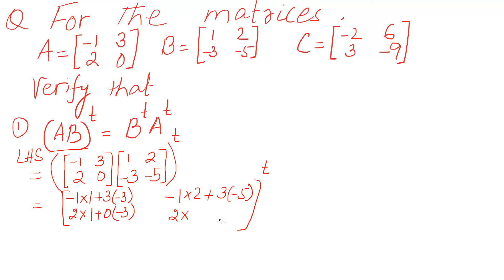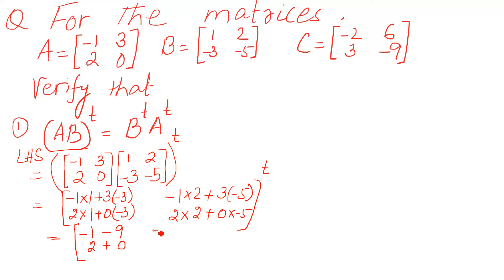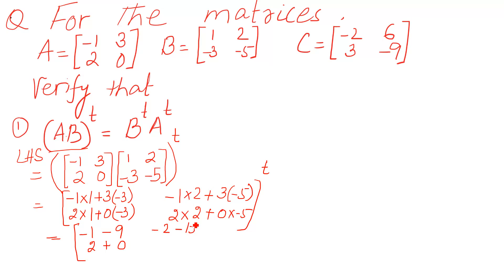You should be very, very careful when doing this multiplication. We simplify: it will be negative 1, negative 9, and then 2. One times two plus zero, then we have negative two, negative fifteen.